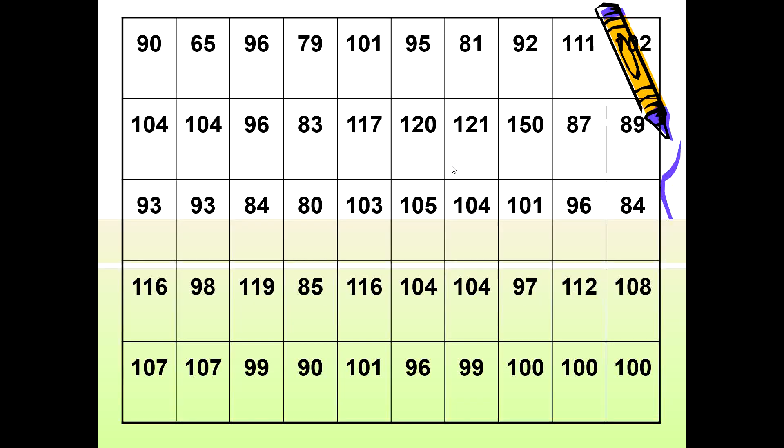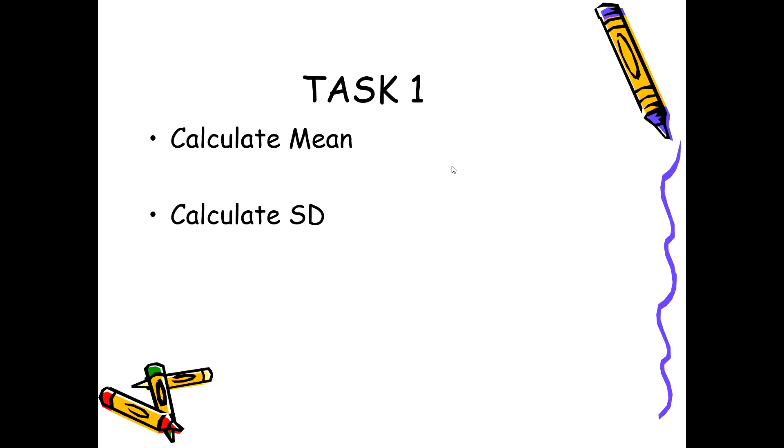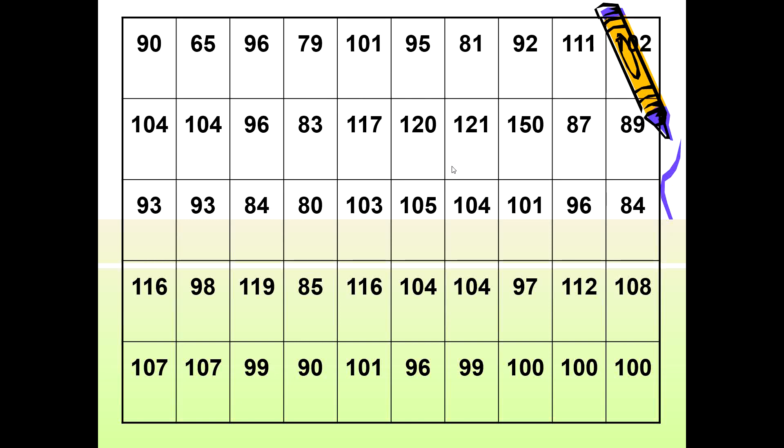Here is a data set with multiple numerical observations. For this data, I request you to calculate the mean — the measure of central tendency — and calculate the standard deviation — the measure of dispersion. This is your Task 1.